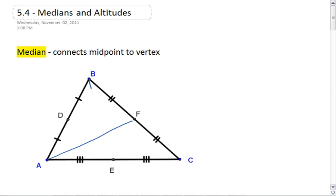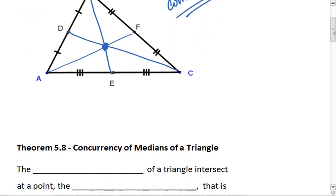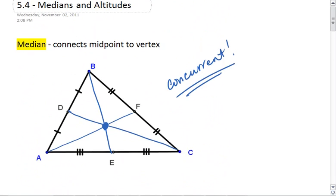We can see that we can draw three medians in a triangle, and that all the medians are concurrent. The three medians intersect at a single point. And this is true.